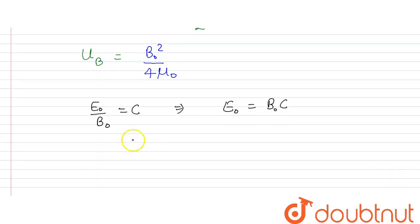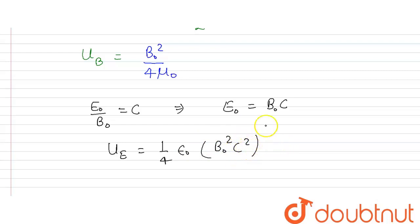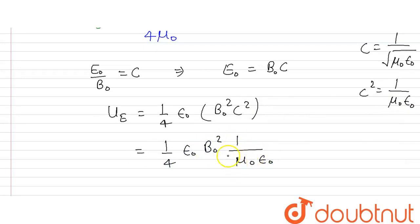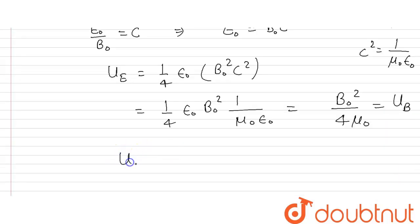Substituting E₀ = B₀c into equation 1, u_e becomes (1/4) ε₀ B₀² c². We know that the electromagnetic wave travels with the speed of light c, and c equals 1/√(μ₀ε₀), so c² equals 1/(μ₀ε₀). Substituting c², we get (1/4) ε₀ B₀² times 1/(μ₀ε₀). The ε₀ cancels, giving B₀²/(4μ₀), which equals the energy density of the magnetic field. Thus we have shown that the energy density of the electric field equals the energy density of the magnetic field.